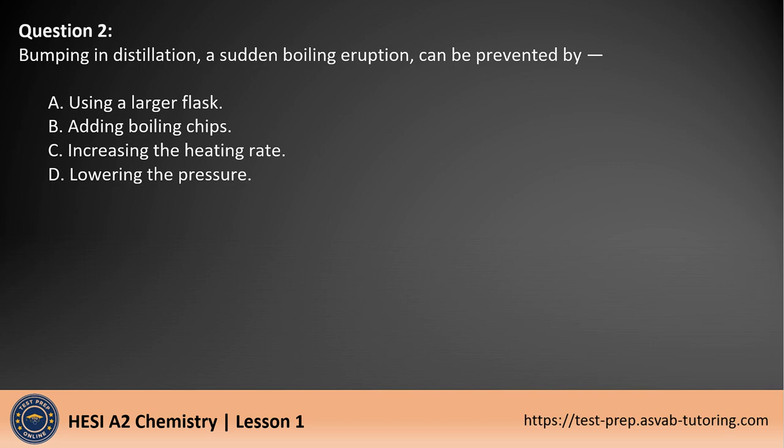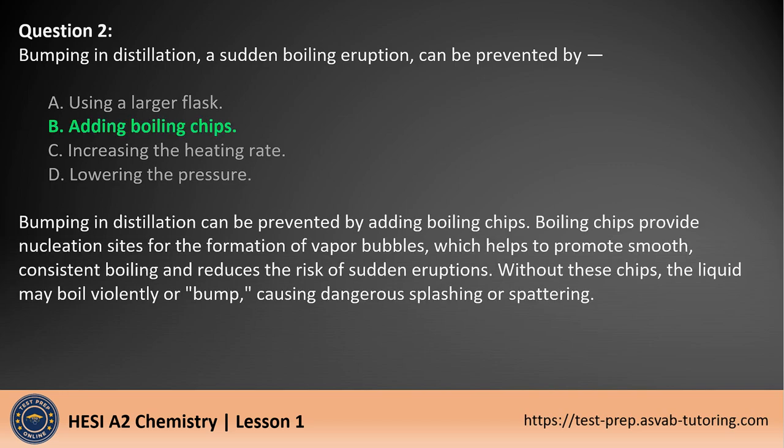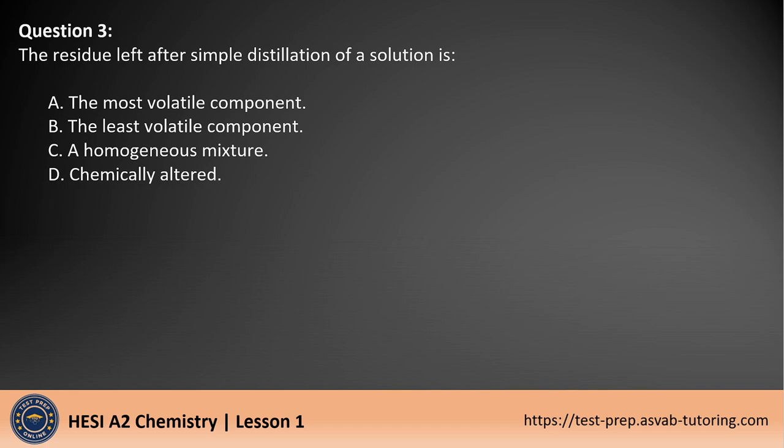The answer is B. Bumping in distillation can be prevented by adding boiling chips. Boiling chips provide nucleation sites for the formation of vapor bubbles, which helps to promote smooth, consistent boiling and reduces the risk of sudden eruptions. Without these chips, the liquid may boil violently or bump, causing dangerous splashing or spattering.